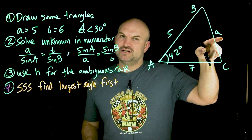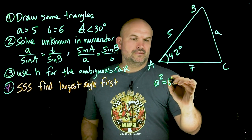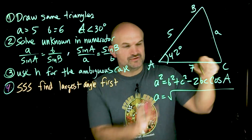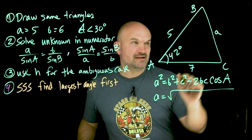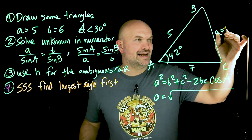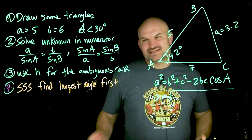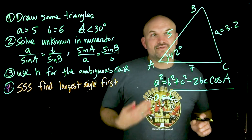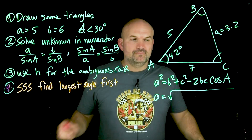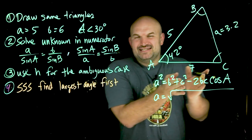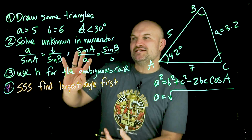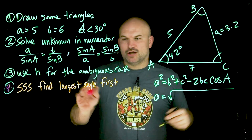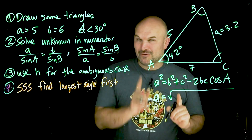If we go ahead and solve for a using the law of cosines, you plug in the values, take the square root, and you get some value — let's say a equals 3.2. Now, the best way to avoid the ambiguous case would again be to use the law of cosines to find B and C as well. But the law of cosines has a lot of values to plug into your calculator and more opportunities to make mistakes — that's why students like the law of sines, as long as we can avoid the ambiguous case. So do we just pick the largest angle to go first for SAS?